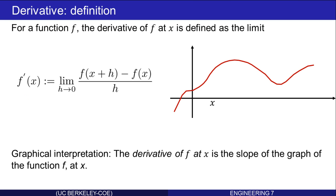The graphical interpretation is that the derivative of f at x is the slope of the graph of the function f at x. Here is the slope, which is given by this rise over run expression here, for a finite non-zero h. Here is the rise over run for a smaller h, and in the limit, as h goes to 0, the rise over run becomes the slope of the graph at the point x, and that's the derivative.